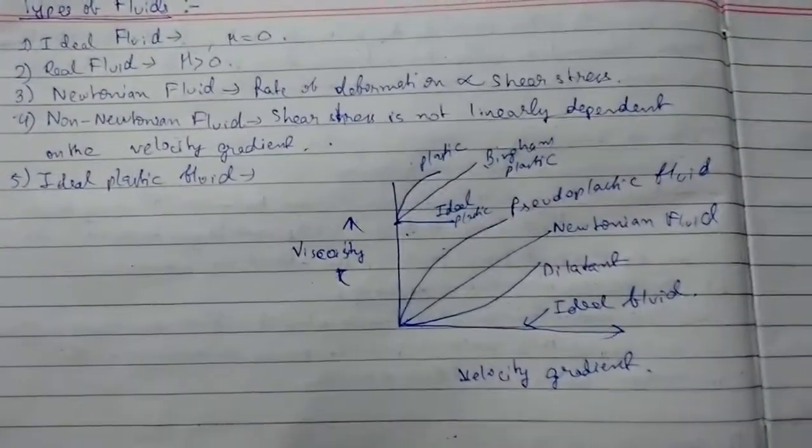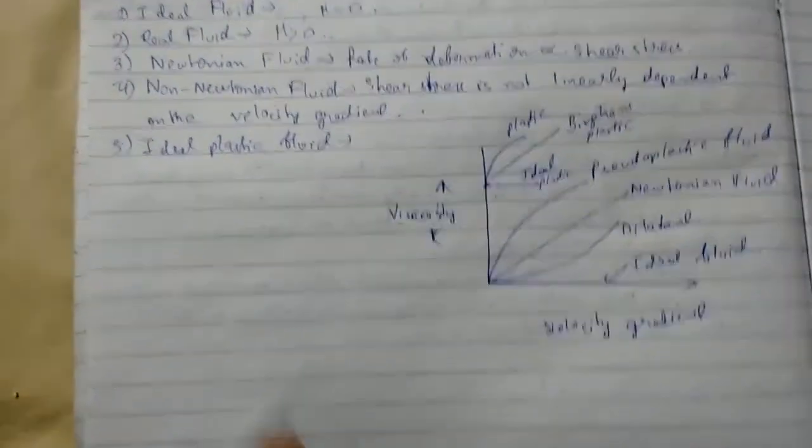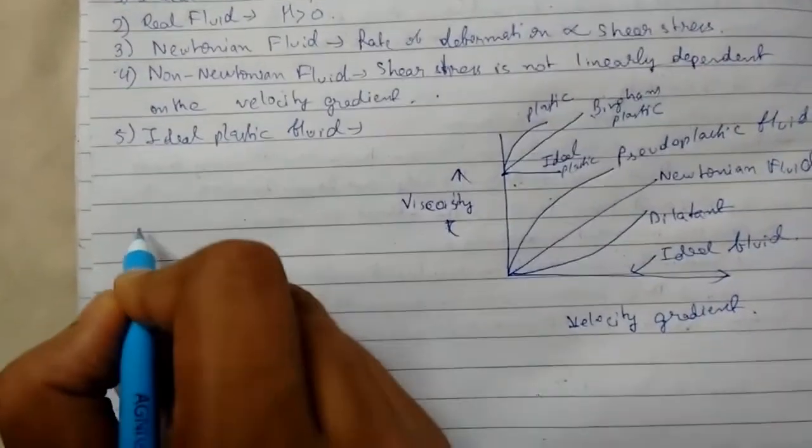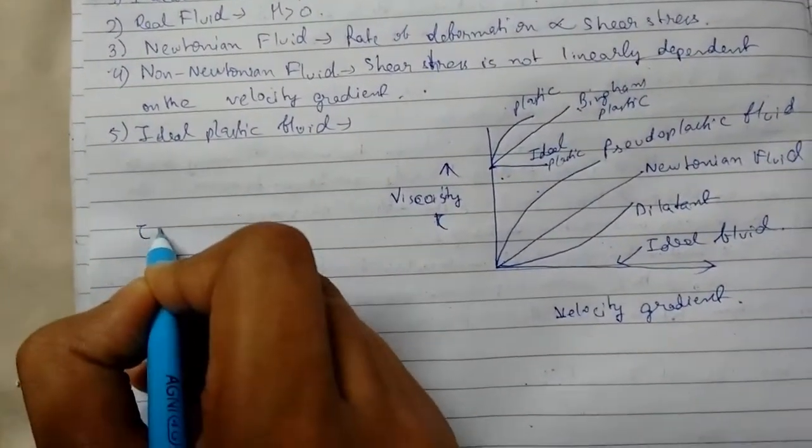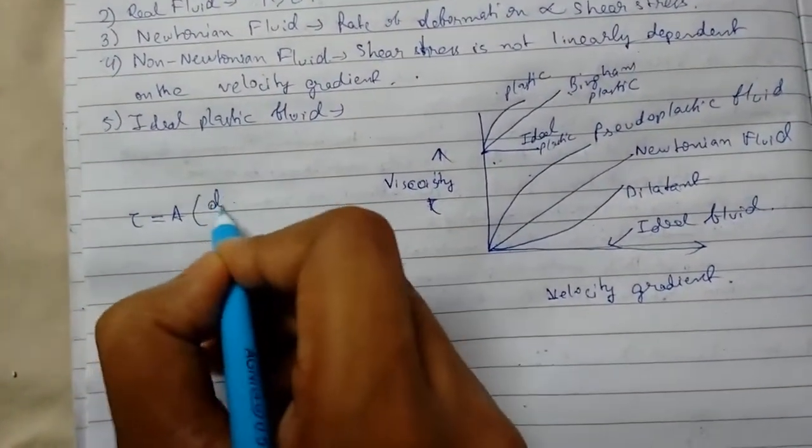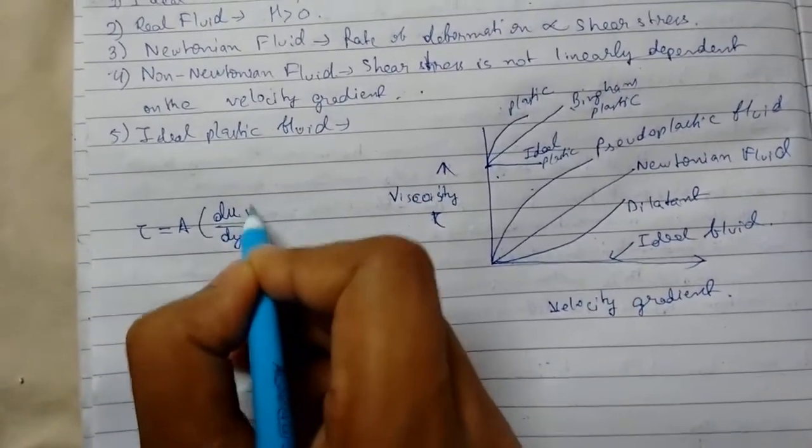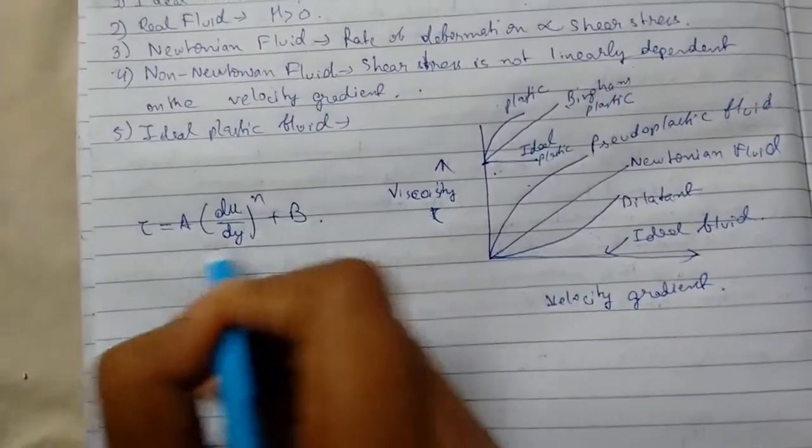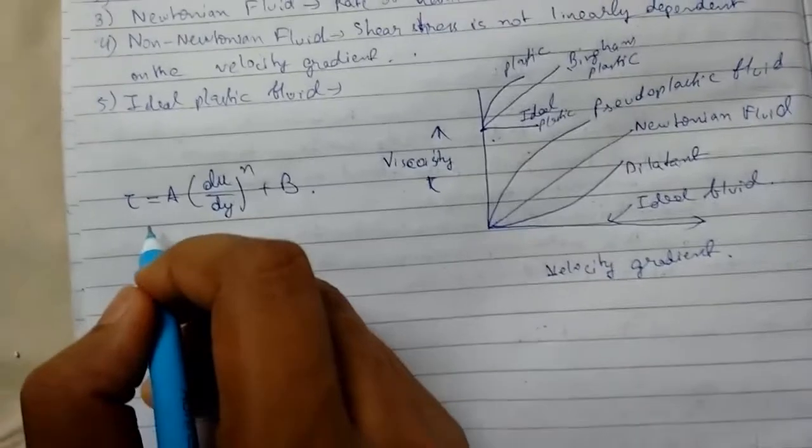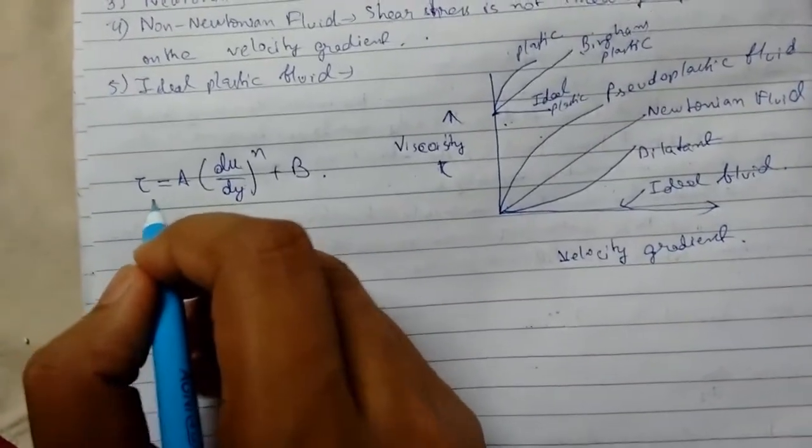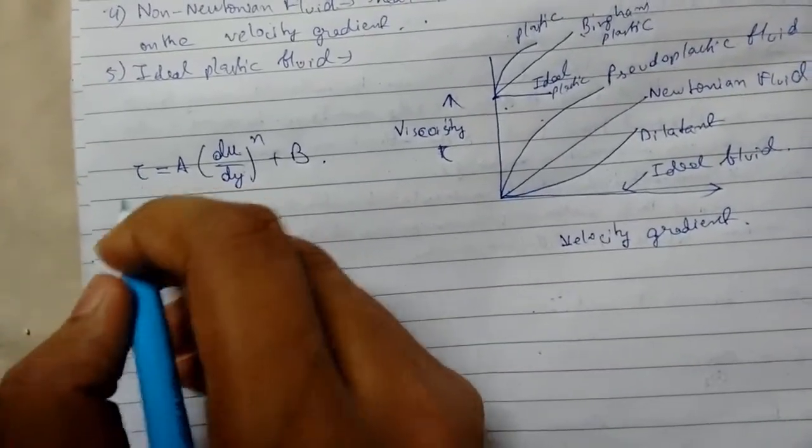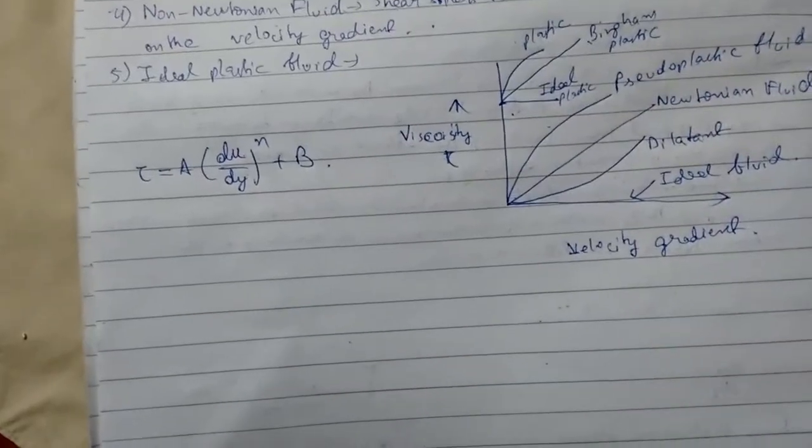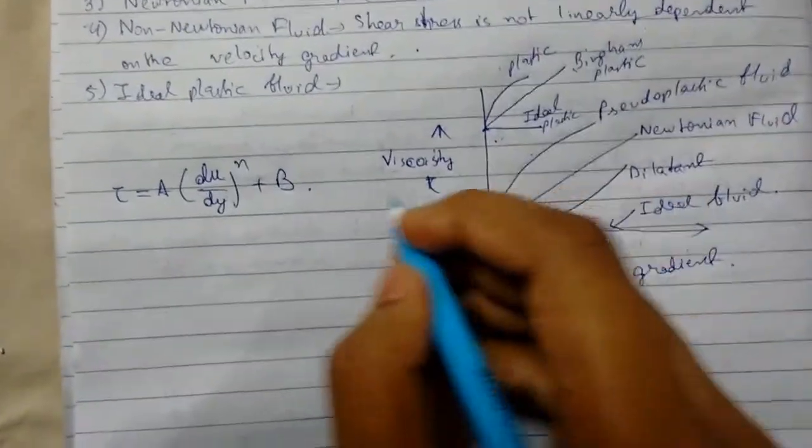I will write here a very important relationship between tau that relates velocity gradient like this. Where a and b are constants which depend upon the type of fluid and the conditions imposed on the flow.